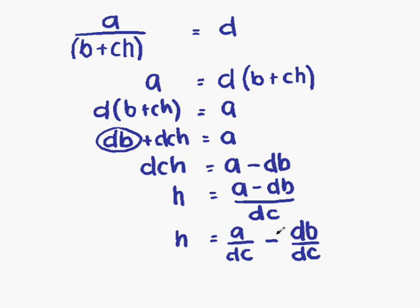If we look at the fraction on the right-hand side, we have DB over DC. Our D's can cancel. That leaves us with H equals A over DC minus B over C.